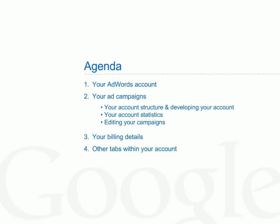Here's the agenda for this session. We'll first cover a couple of account basics, then jump straight into your ad campaigns, how to organise your account, account statistics and editing. We'll then cover your billing details, and finally take a quick look at other features of your account. At the end of this session, you should have a good grasp of where to find everything in your account, as well as how to make edits and updates.